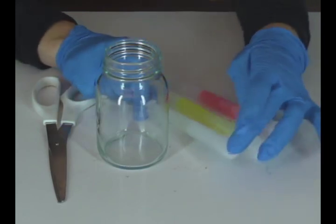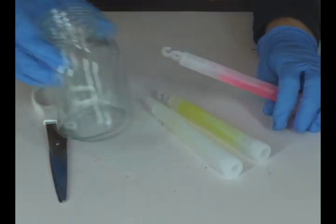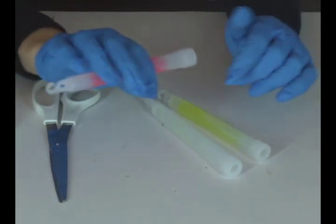So I have three different glow sticks here: a red one, a green, and a blue. We're going to activate them. Remember to activate your glow sticks, all you need to do is break the little glass container inside and then shake it up.